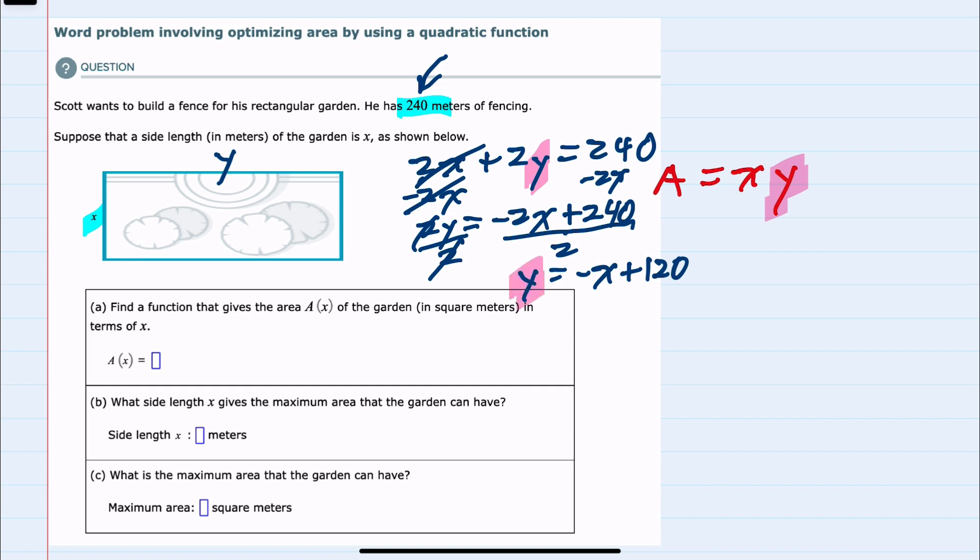negative 2x over 2 would be a negative x plus 240 over 2 would be 120. We now have solved for y using the perimeter formula, and we can do that substitution into our area function and say that the area now is a function of x would be x times y, but we've just said that y is negative x plus 120. So distributing the x on the outside, x times a negative x is negative x squared, and x times 120 is 120x, we have found the function for the area as negative x squared plus 120x.